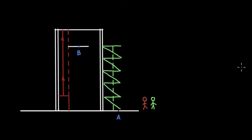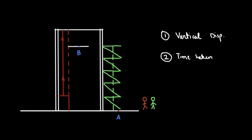Let's say you and your friend are in front of a building and both of you want to get from the ground floor to the top floor, which I've marked by points A and B. One of you decides to take the lift and the other person takes the stairs. We want to calculate two values for this situation.